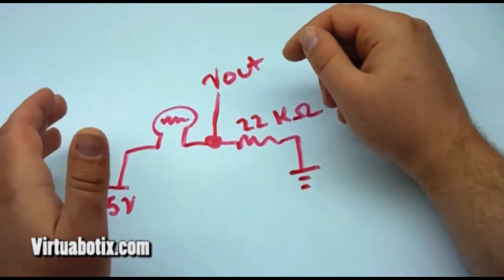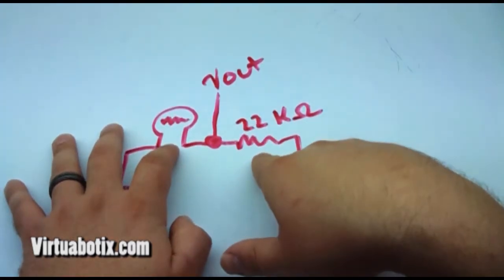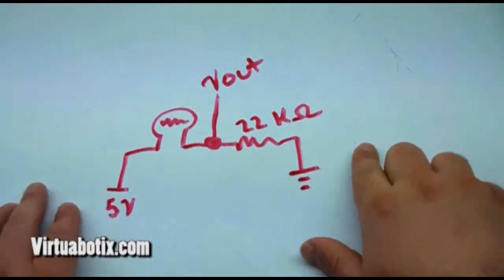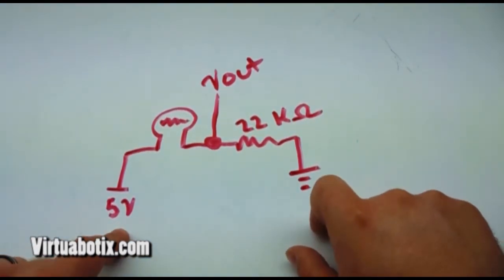Basically what we're doing is we've got a variable resistor which is dependent on pressure and a 22 kilo ohm resistor right here between 5 volt supply. So over here we have ground, here we have 5 volts.